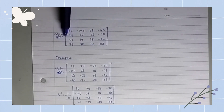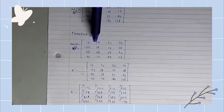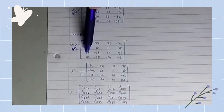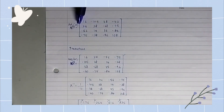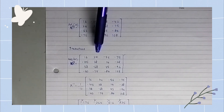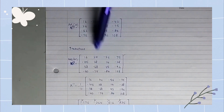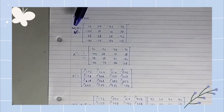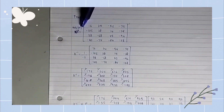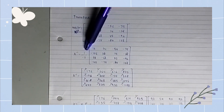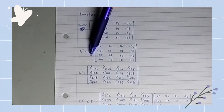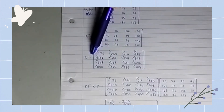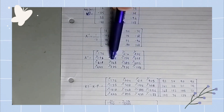To transpose, the first row becomes the first column — for example, 16, negative 105, 38, and 84 become the first column as 16, negative 105, 30, and negative 40. Similarly, the second row becomes the second column, the third row becomes the third column, and the fourth row becomes the fourth column, giving us the adjoint of A. The adjoint A is then multiplied by one over the determinant, negative 11, to obtain the inverse matrix.